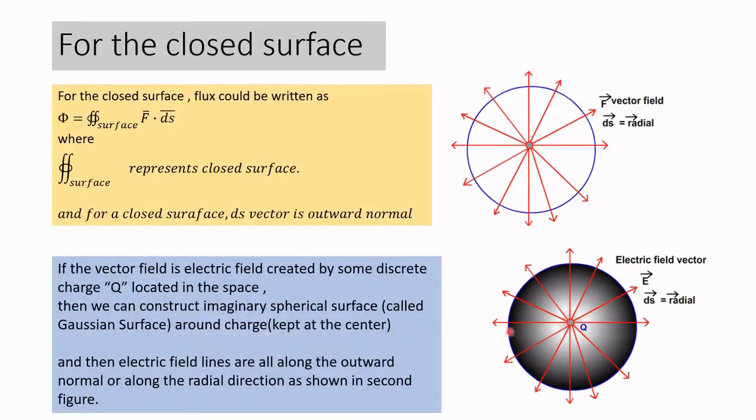Here we could see that a discrete charge is located somewhere in space, and we could construct an imaginary spherical surface around it with a certain fixed radius, keeping that charge at the center. Then all the electric field lines which are coming from this particular electric charge are along the radial direction.